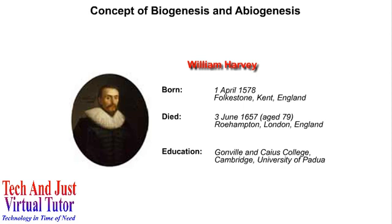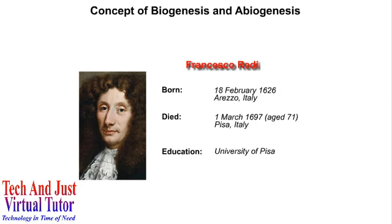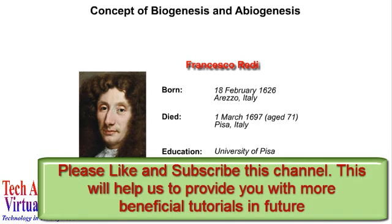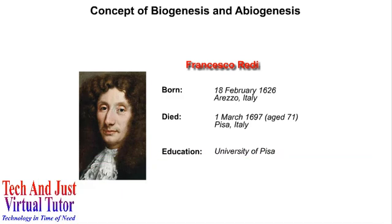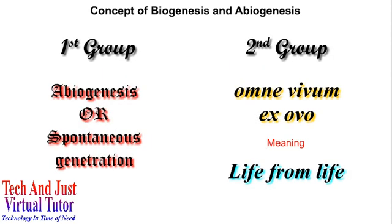Later in the 17th century, another strong proponent of Biogenesis emerged — an Italian physician by the name of Francesco Redi. Around 1668, Francesco Redi performed various experiments to demonstrate that life generates from life and does not generate spontaneously. However, the proponents of Abiogenesis strongly criticized his experiments and continued to support Abiogenesis.